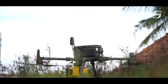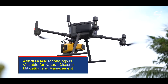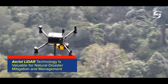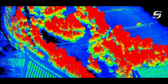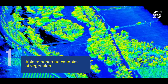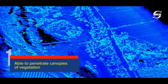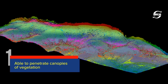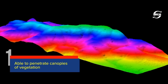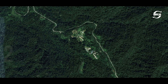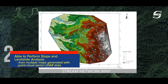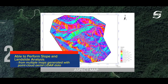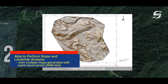Aerial lidar technology offers advantages for natural disaster mitigation and recovery efforts that normal RGB cameras do not. One significant advantage is the ability to penetrate canopies of vegetation, unlike RGB cameras, providing a more accurate representation of the terrain beneath the canopy. Multiple maps with different types of information crucial in slope and landslide assessments can be generated with point cloud data from aerial lidar.